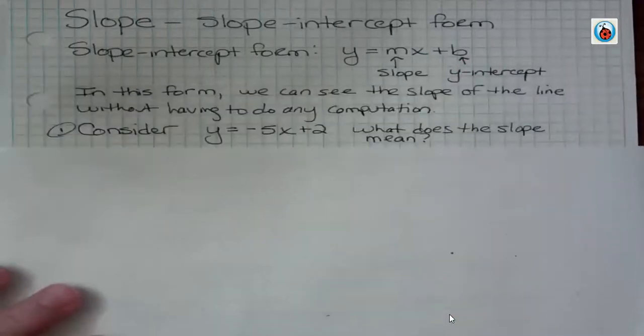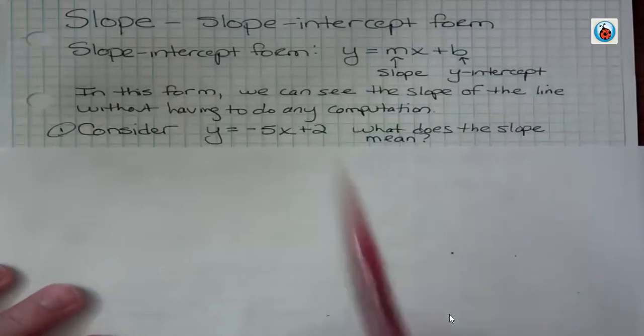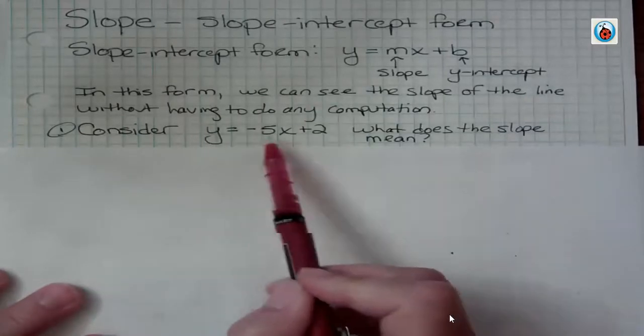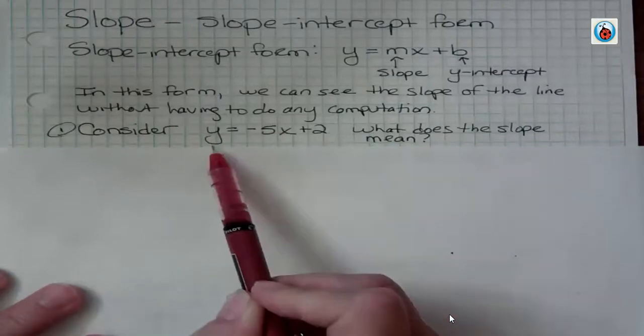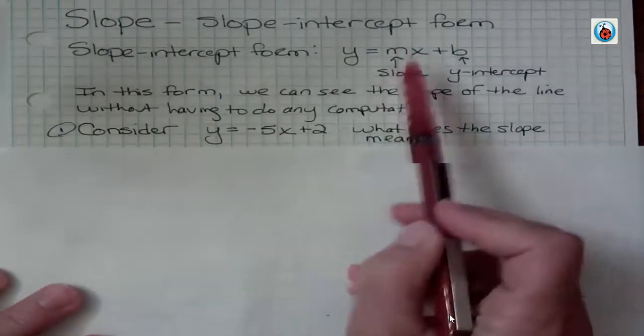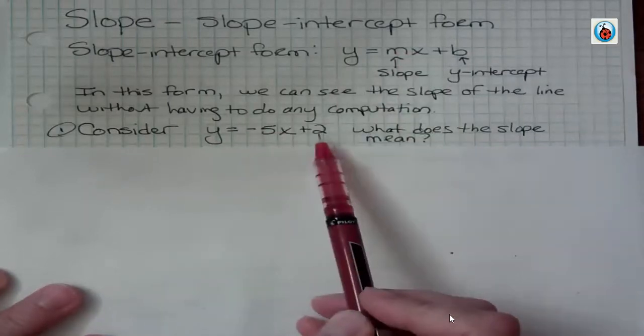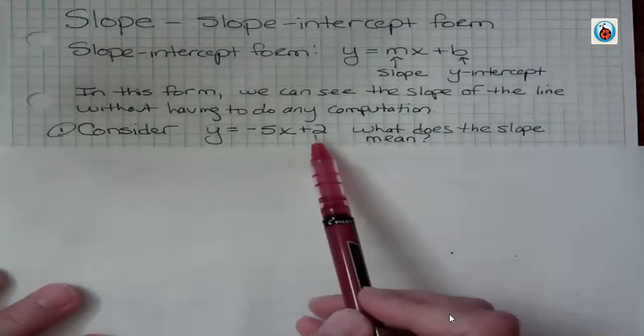We don't have to do any computation to see the slope. So in this particular equation, y equals negative 5x plus 2, that is in slope-intercept form. Y is by itself, followed by the x term, and then a number at the end. If that didn't have a number, that just means the number would be zero.